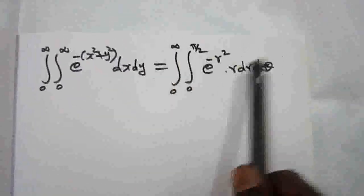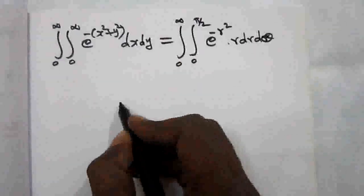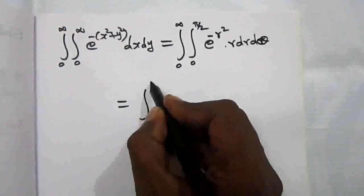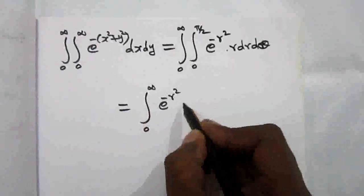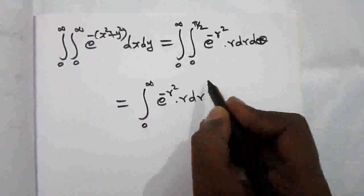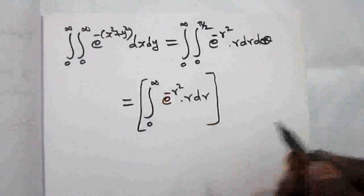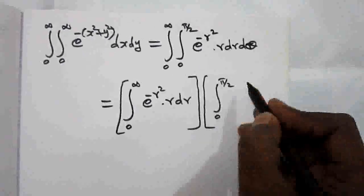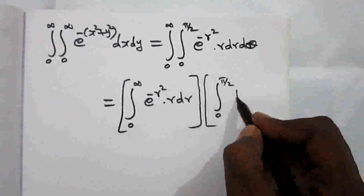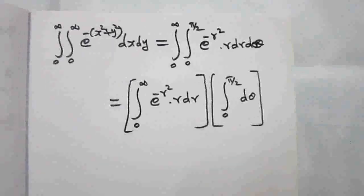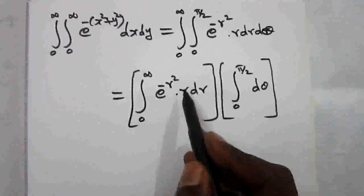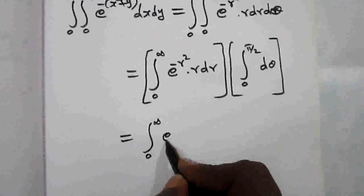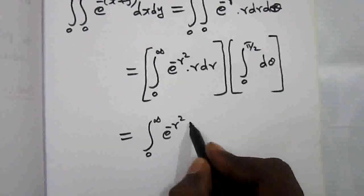Since both limits are constant, we can separate the integrals. The first integral is the integral from 0 to infinity of e to the power minus r squared, times r dr. The second integral is the integral from 0 to π/2 of dθ only.